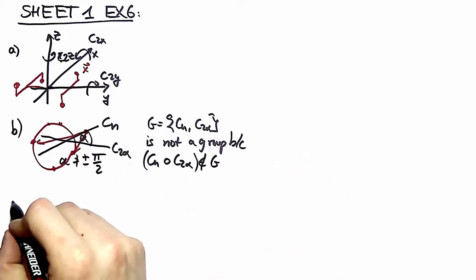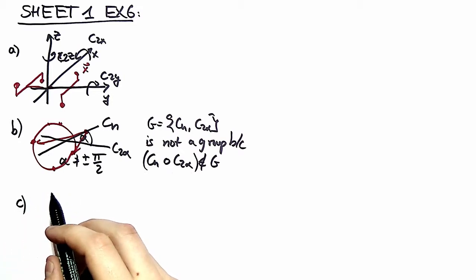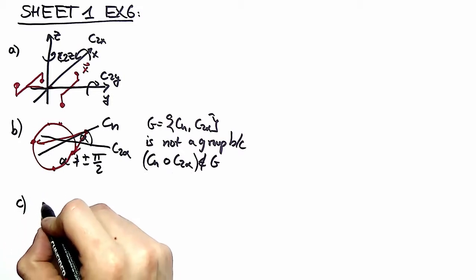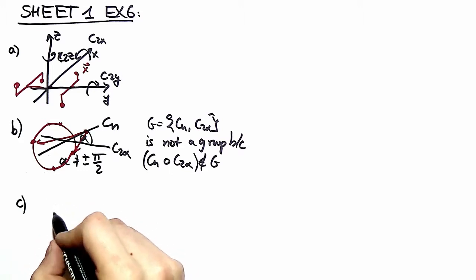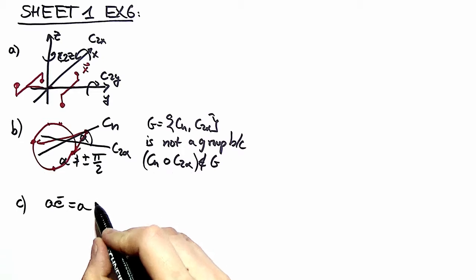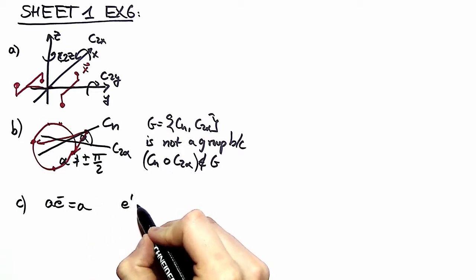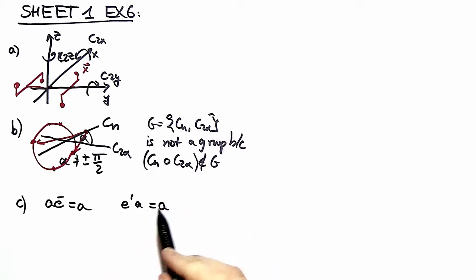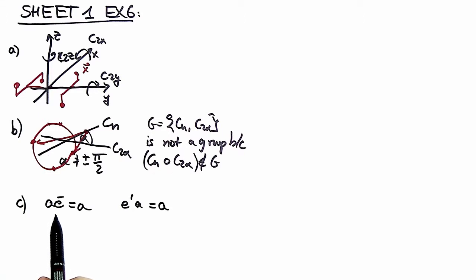In part C we're asked to look a little closer to left and right identities. We write down the definitions again. If we multiply e bar to a, a doesn't change, and if we left multiply e prime to a, a doesn't change.